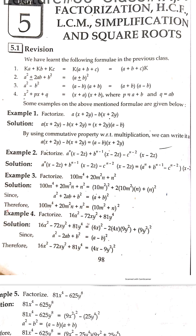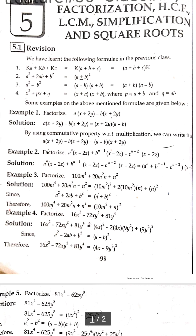Example 1: By using commutative property with respect to multiplication, we can write A(X + 2Y) - B(X + 2Y) which equals (A - B)(X + 2Y). This is factorization from class 8.